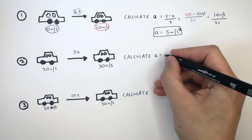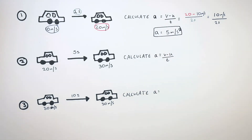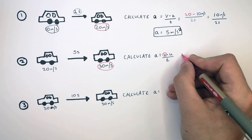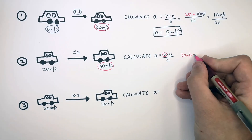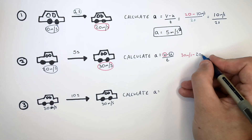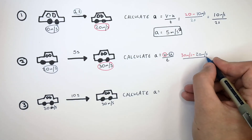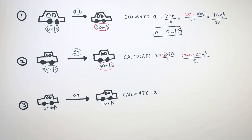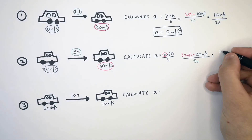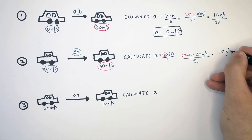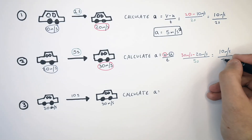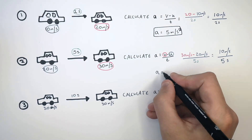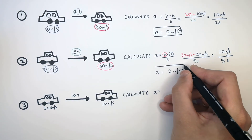Recall the equation a equals v minus u over t. The final velocity is 30 meters per second, the initial velocity is 20 meters per second, and the time is 5 seconds. The change in velocity is 10 meters per second, and you divide 10 meters per second by 5 seconds. That gives you an acceleration of 2 meters per second squared.